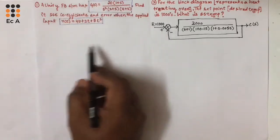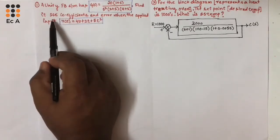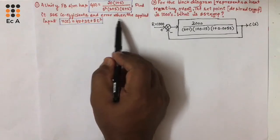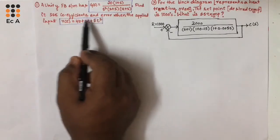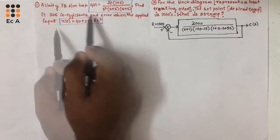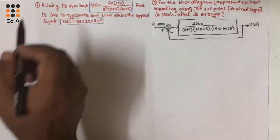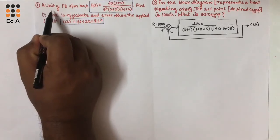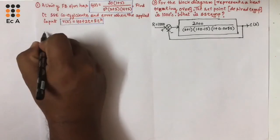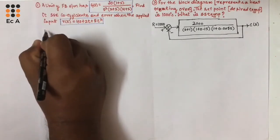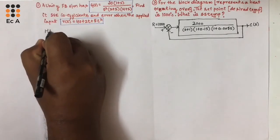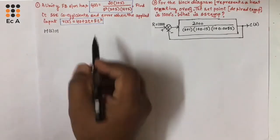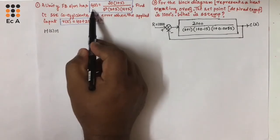For this, we need to find the steady state error coefficients as well as the error when we apply the input R(T). Whenever the system is given as a unity feedback system, we need to know that H(S) is equal to 1, and they have given G(S).